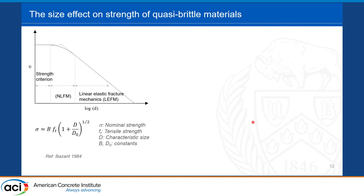The size effect can be explained using Bazant's categorization of failure types. Brittle materials fail by fracture and crack propagation — larger specimens release more energy, so they fail at lower nominal strength. Ductile materials that fail by yielding are size-independent. In between, quasi-brittle materials are governed by nonlinear fracture mechanics. Bazant proposed an equation to estimate the nominal strength based on tensile strength, characteristic size, and constants B and D-naught depending on the test setup and specimen dimensions.